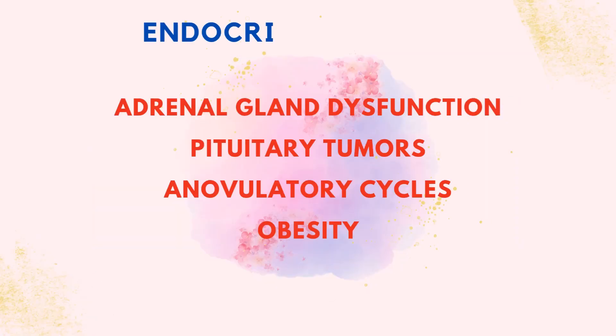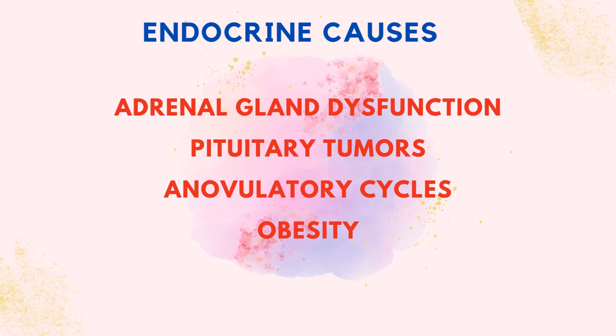The endocrine causes of menorrhagia include adrenal gland dysfunction, pituitary tumors, anovulatory cycles, and obesity.